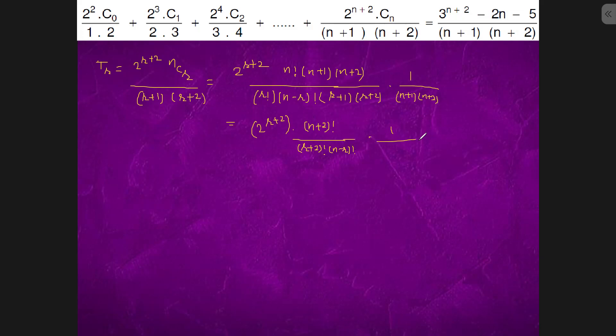This is 1 upon n plus 1 into n plus 2. So if we do summation of tr,